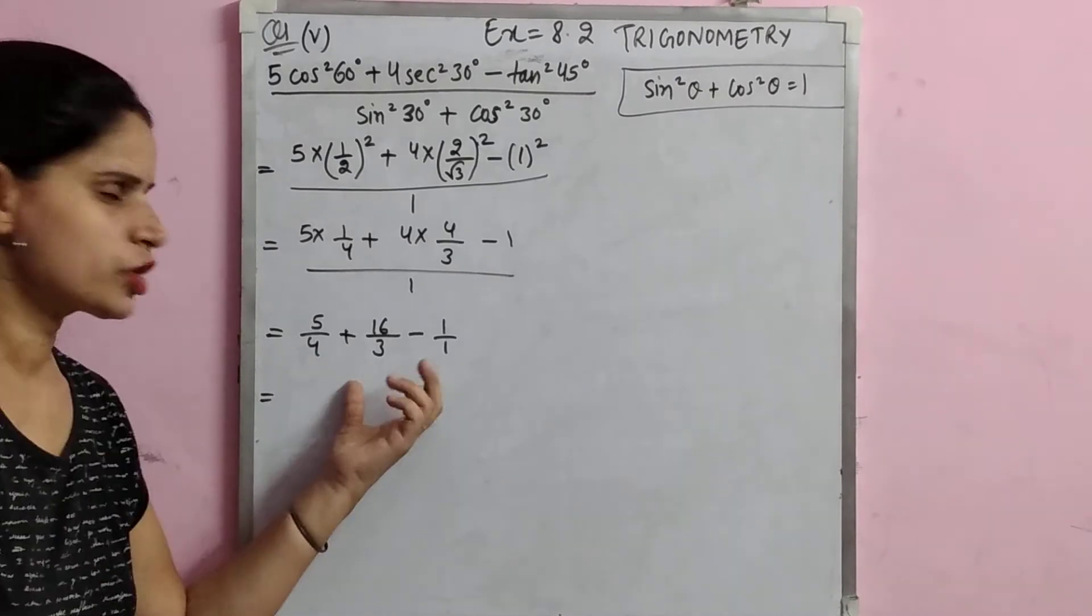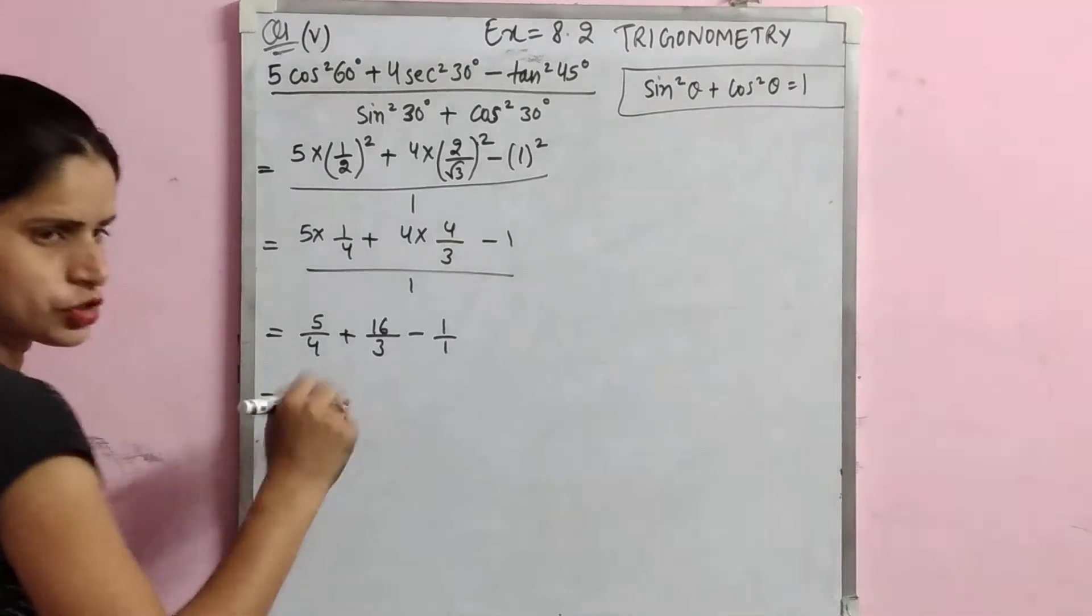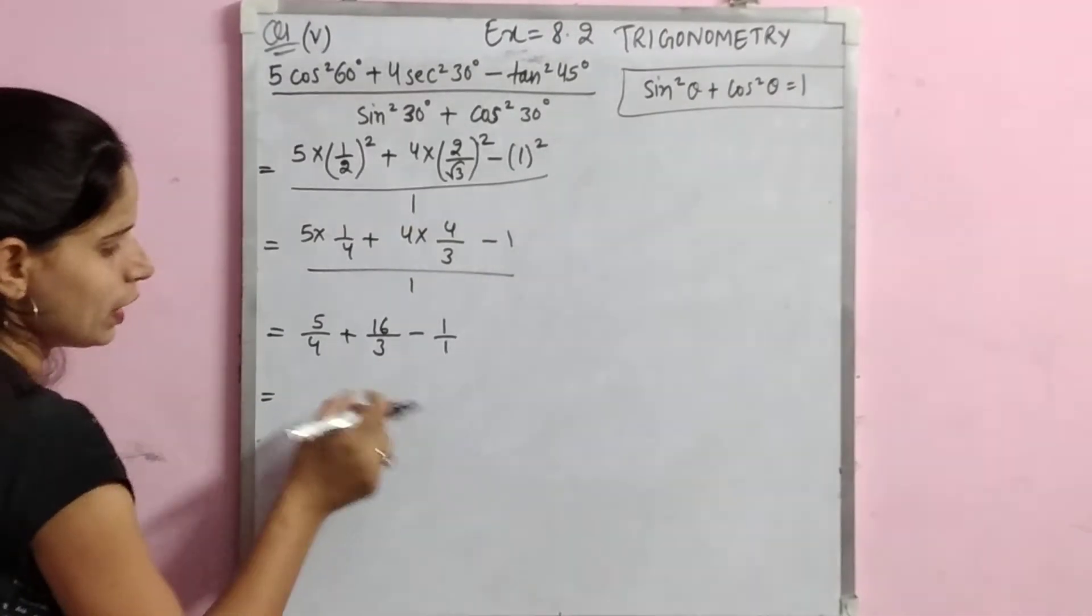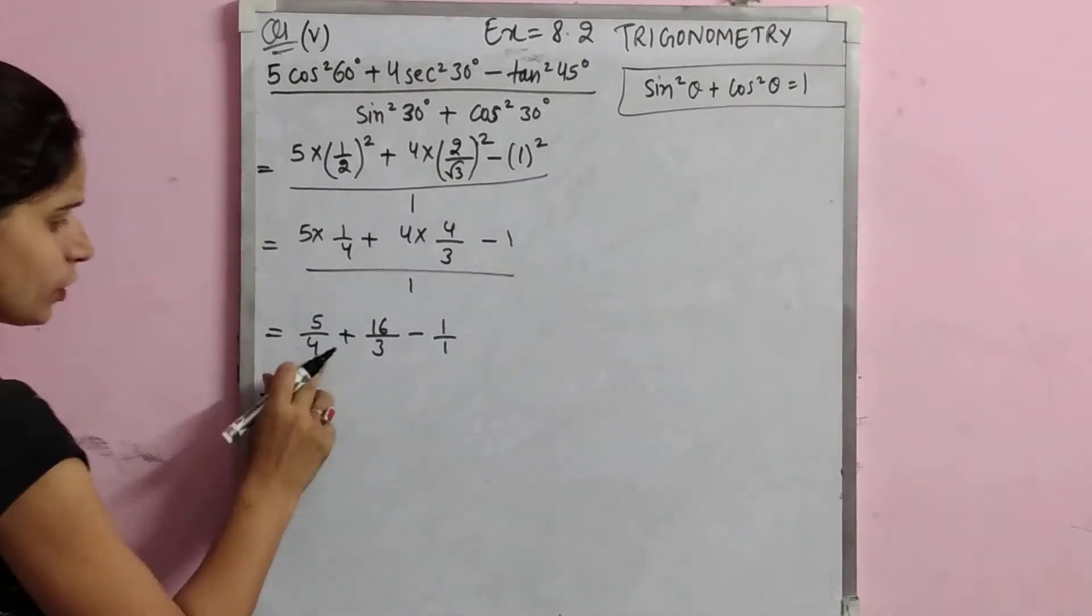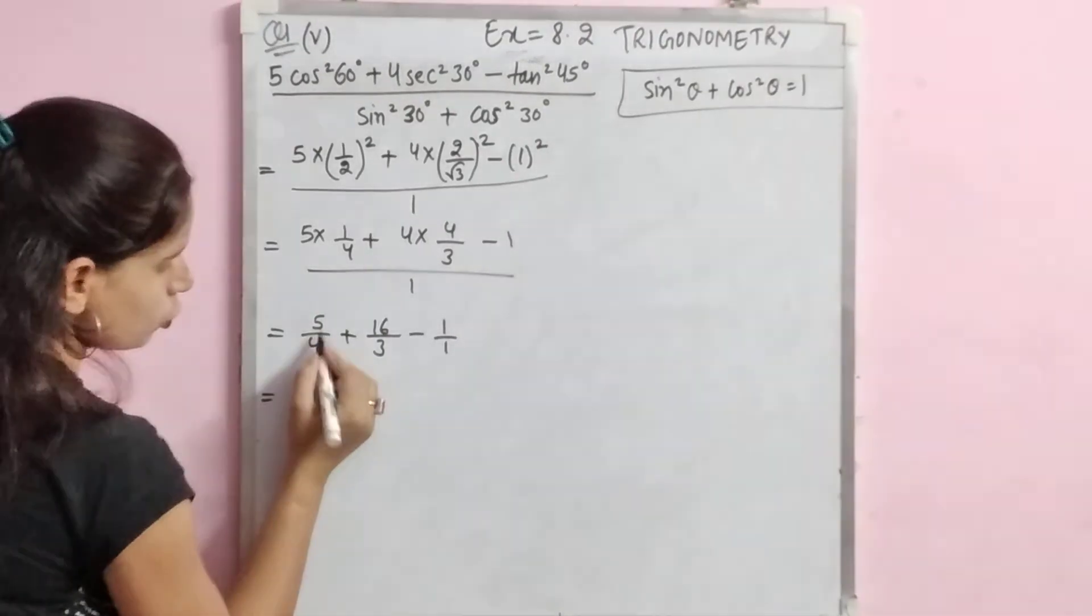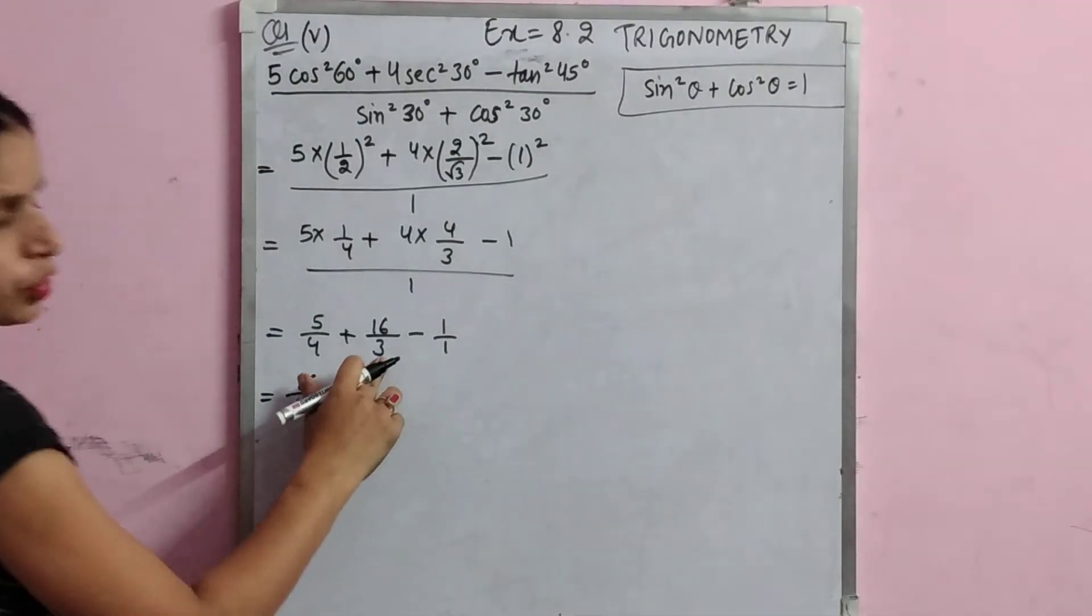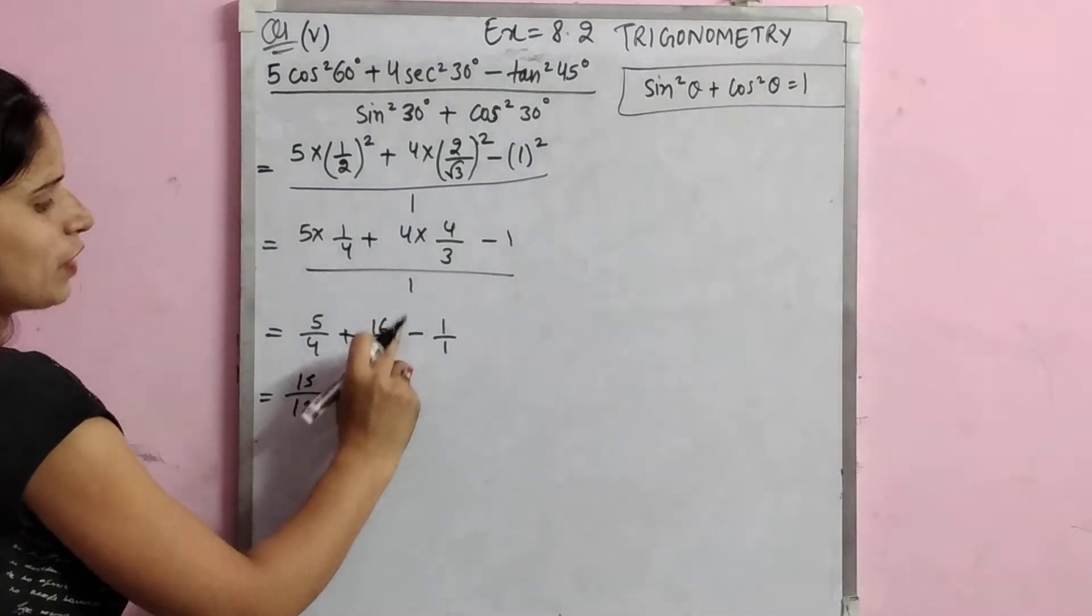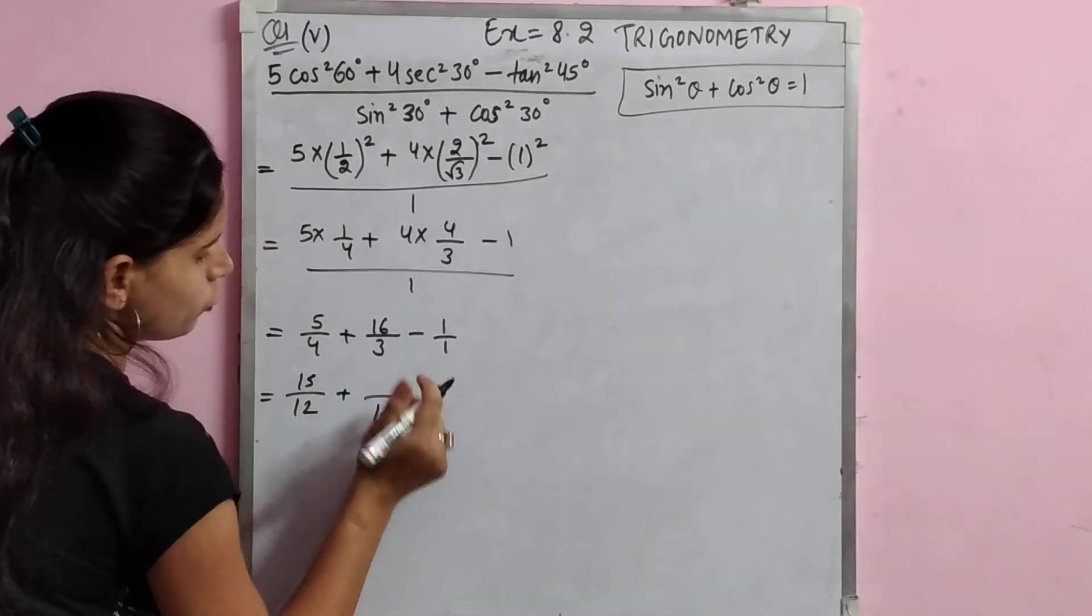Now change it to a common denominator. The LCM of 4 and 3 is 12. So I want 12 as the denominator. To change 4 to 12, multiply by 3, so 5 becomes 15 by 12. To change 3 to 12, multiply this fraction by 4, so 16 times 4 is 64, giving 64 by 12.